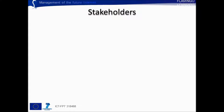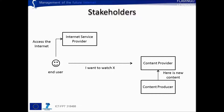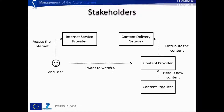If we now look at the stakeholders involved in the content delivery chain, we have on one side the end user and on the other the content producer and content provider, with the former producing new content to be made available to users by the content provider. The end user interacts with the content provider by requesting content. To access this content, the end user needs to subscribe for internet access to its local internet service provider. The content delivery network is on one side responsible for distributing the content of the content provider, and on the other needs to process requests from the ISP's clients.